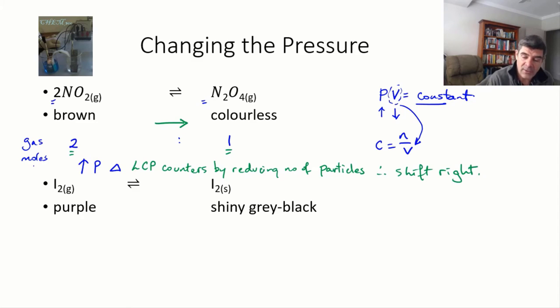At a macroscopic level, you would find that the mixture became a little paler. Some of that brown gas is becoming the colorless gas and therefore the overall color is going to fade a little.